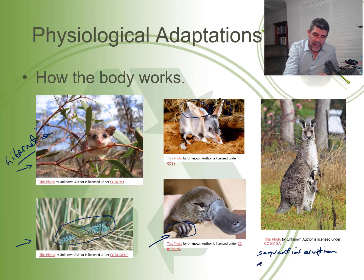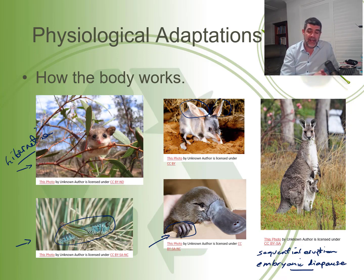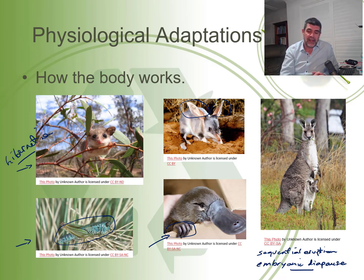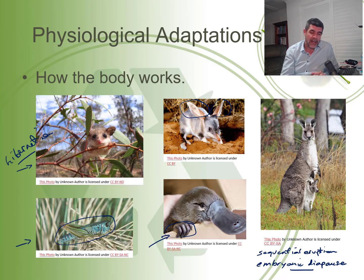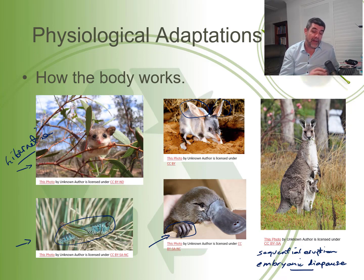Kangaroos also use a process known as embryonic diapause. They have incredible reproductive strategies where they can have joeys at different ages taking milk — different nipples can produce different types of milk, richer in fats depending on the joey's age. Female kangaroos can also pause an embryo's development at a certain stage if conditions are poor, then restart development later when conditions improve. These are all physiological adaptations — how the body works. We'll have a look at a few more examples in class. Thanks for watching.